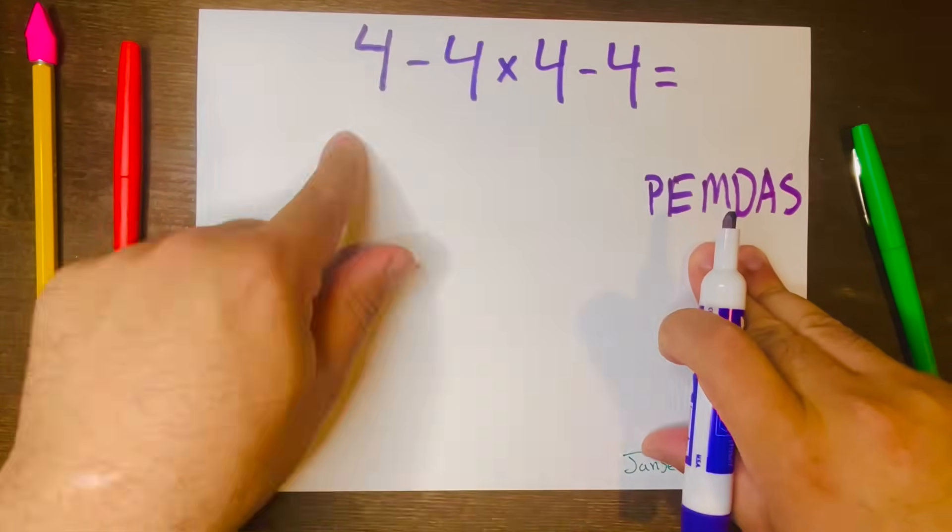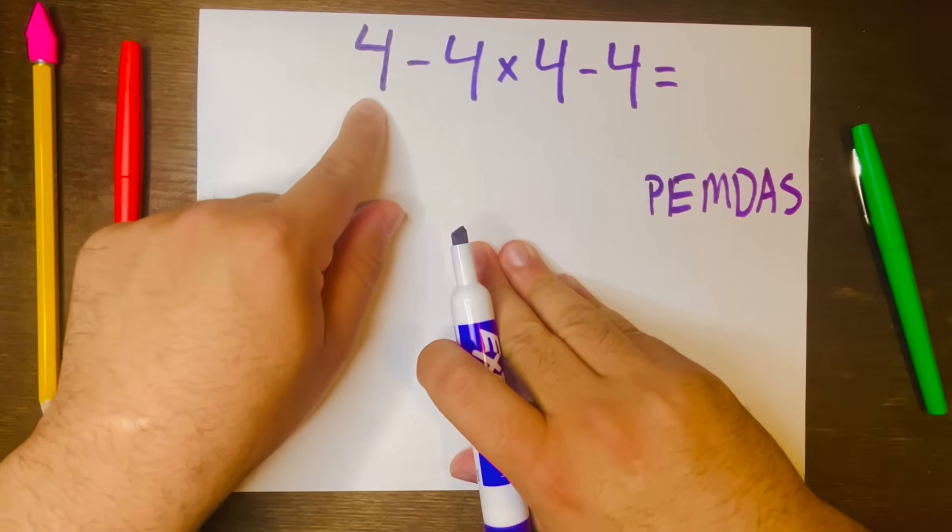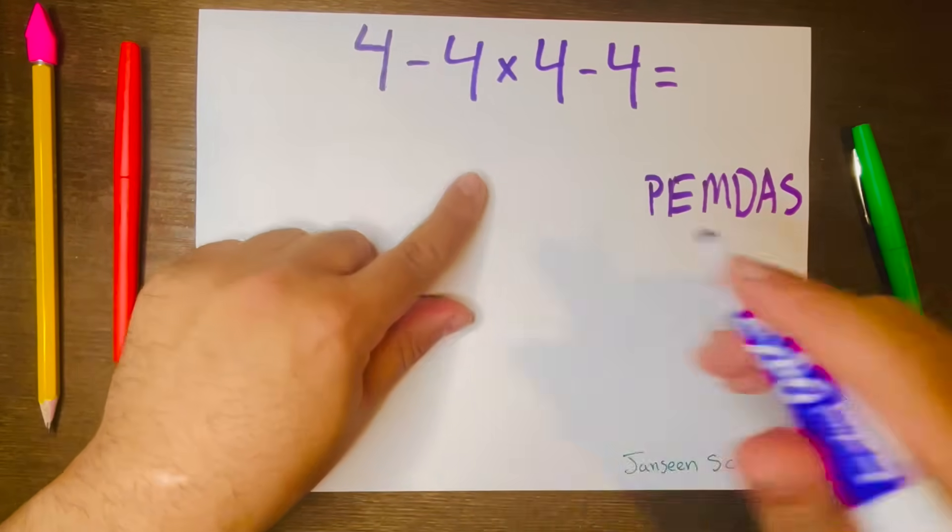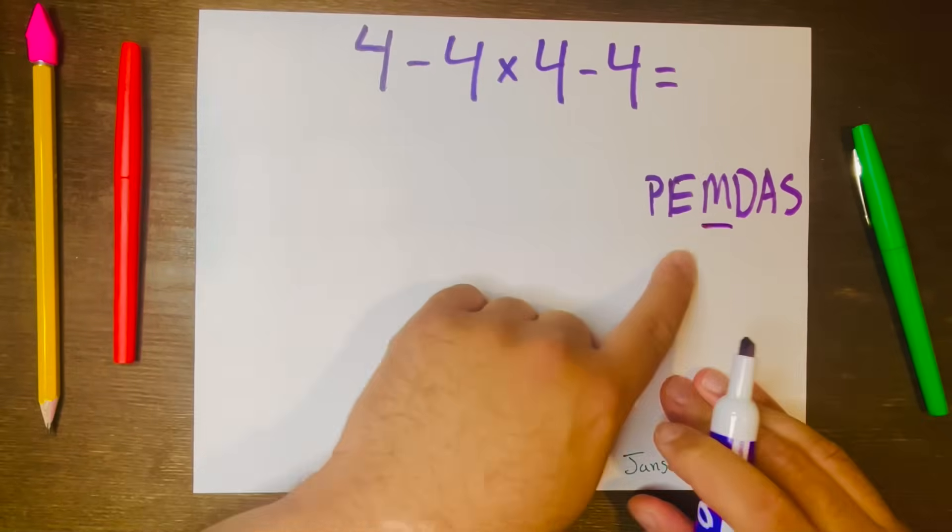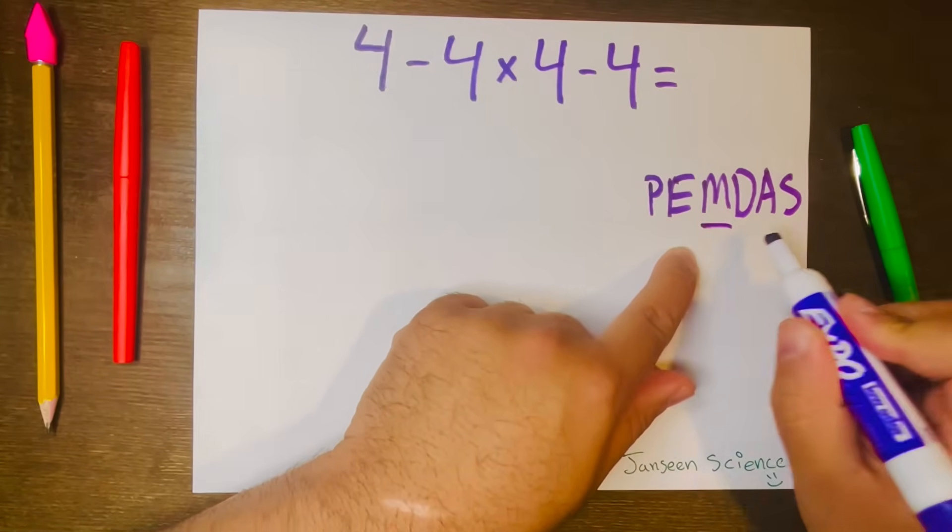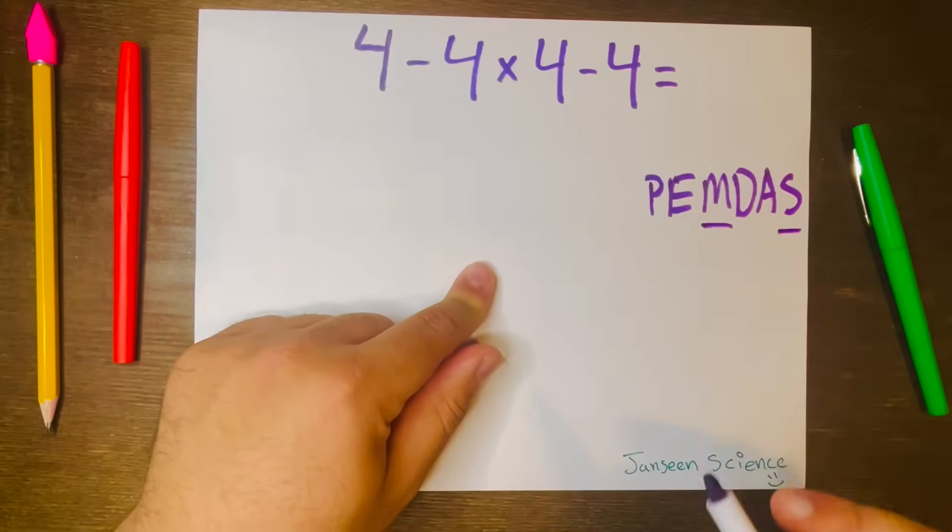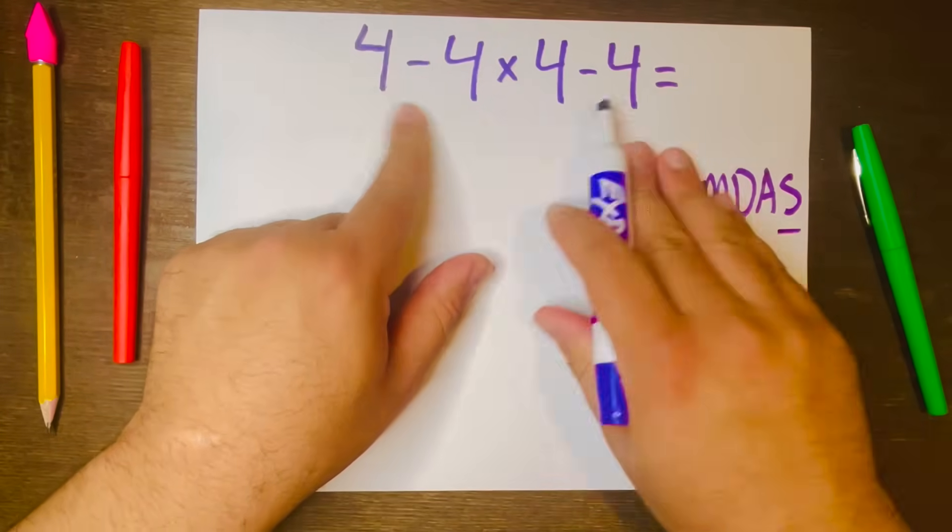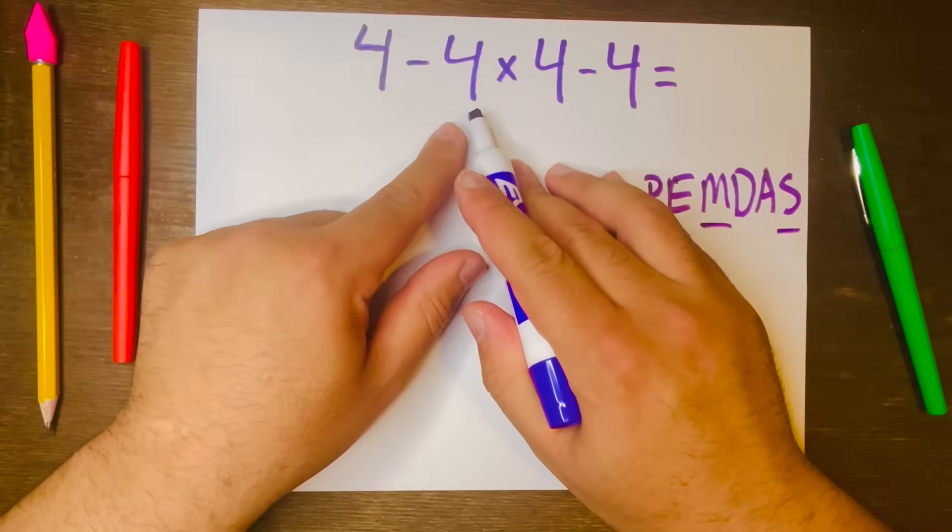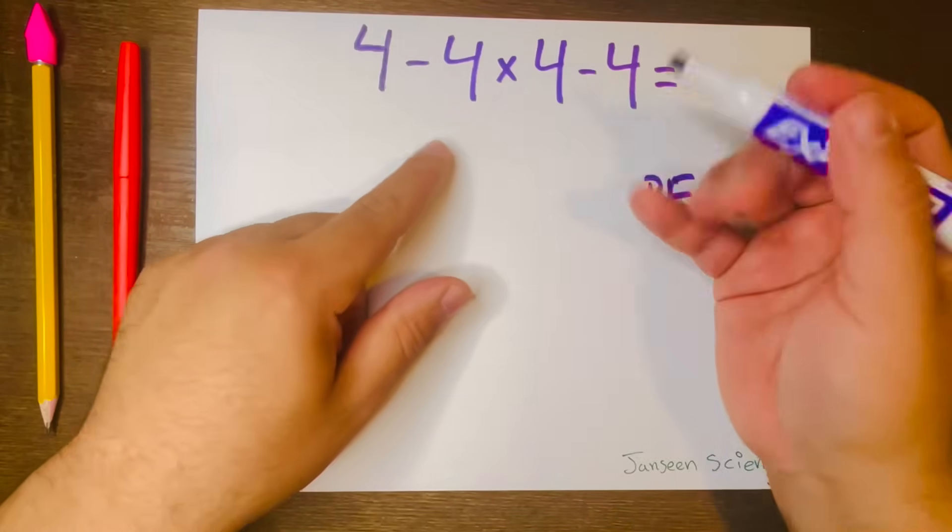Now the first thing we do is multiply—that goes first—and then subtracting will be last. So let's start with multiplication. We look at this problem: 4 times 4 equals 16.